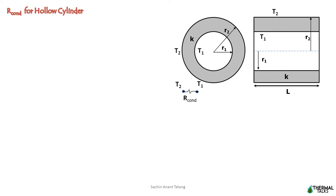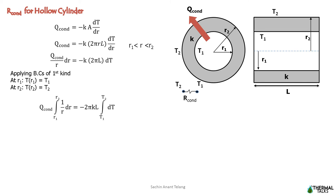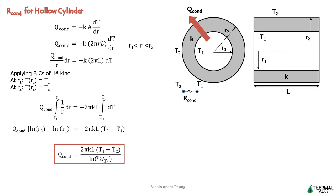Conductive thermal resistance is offered within the material for the heat to flow. We can write heat transfer by conduction within the cylinder as Q_conduction = -K·A·(dT/dr), where area A = 2πRL for any given radius between R1 and R2. Rearranging and integrating the left-hand side from R1 to R2 and the right-hand side from T1 to T2, we deduce that Q_conduction = 2πKL(T1 - T2) / ln(R2/R1).